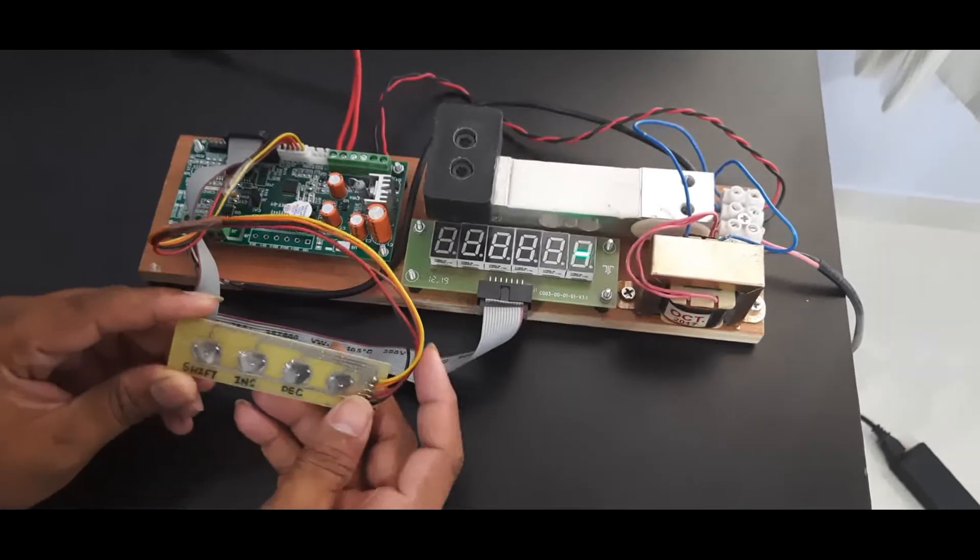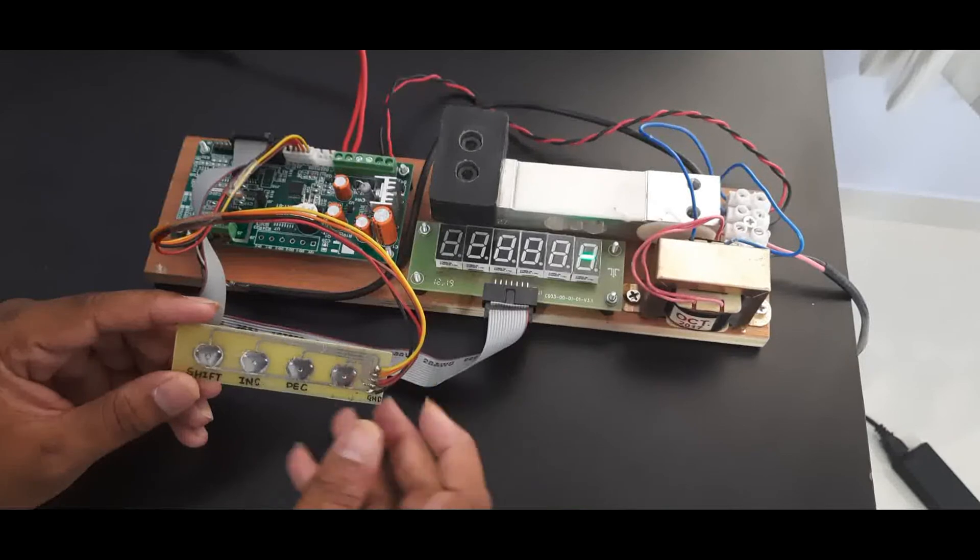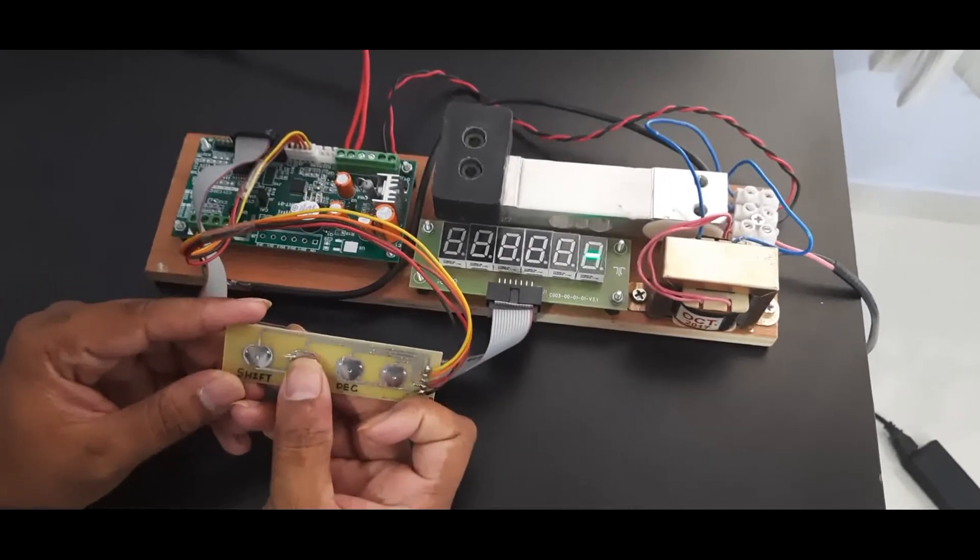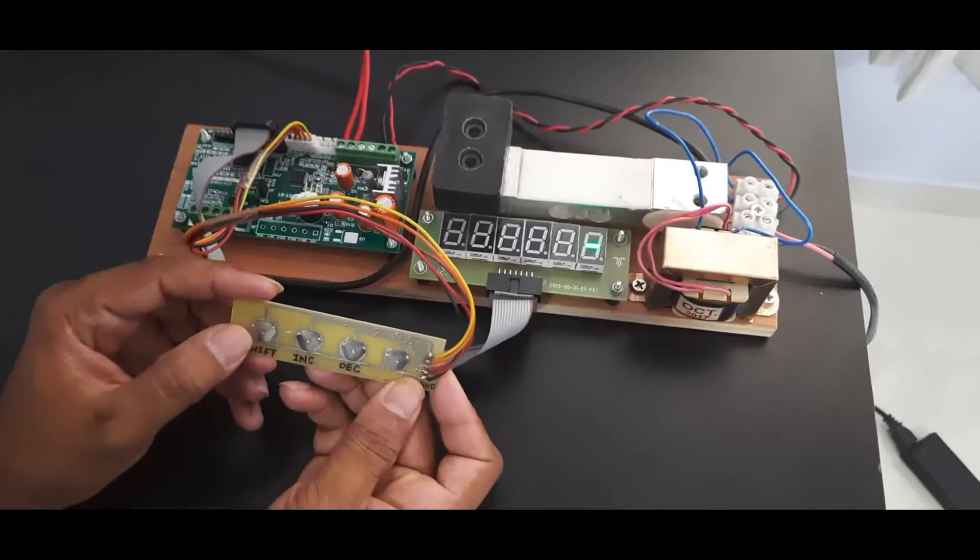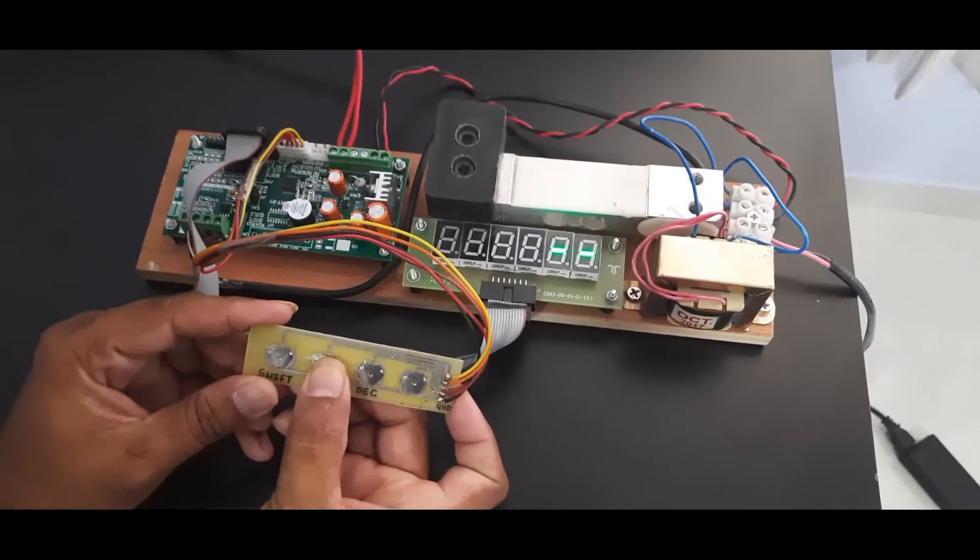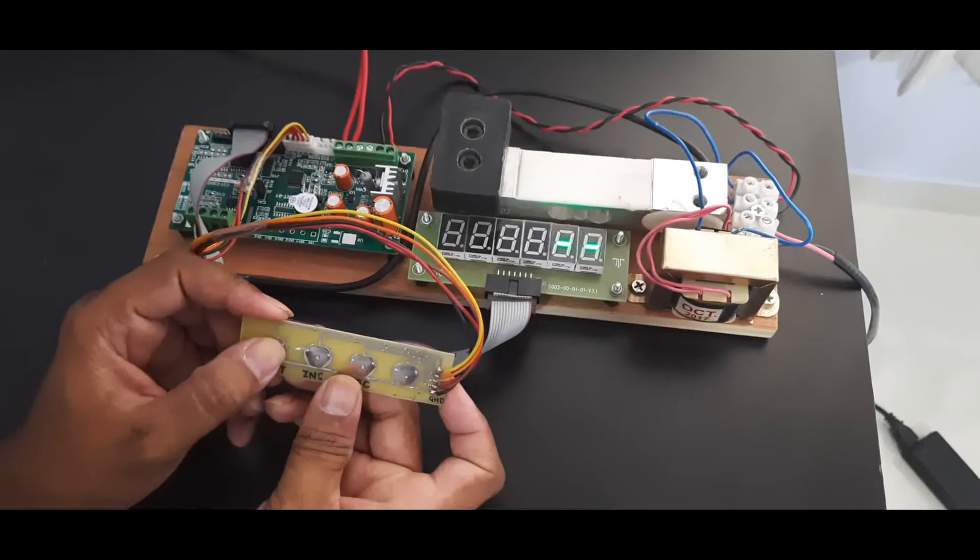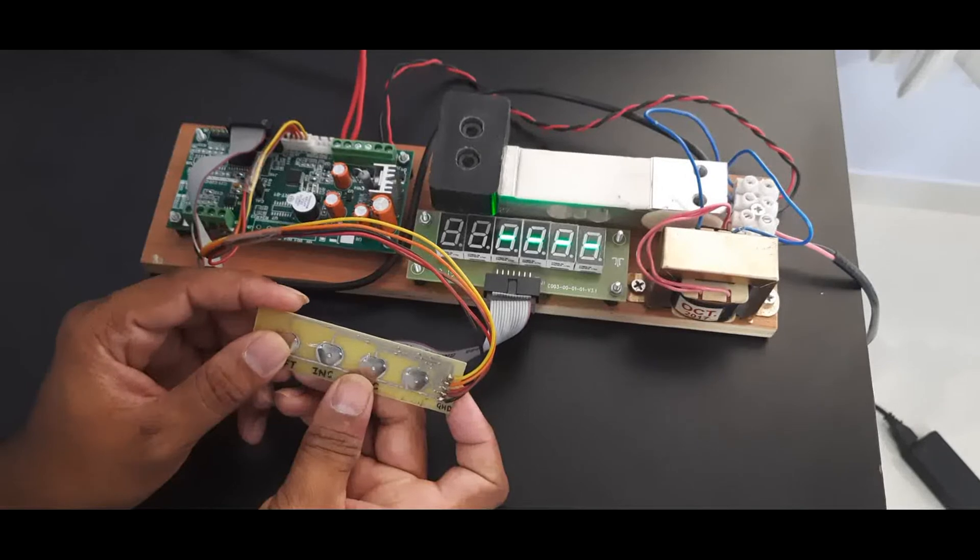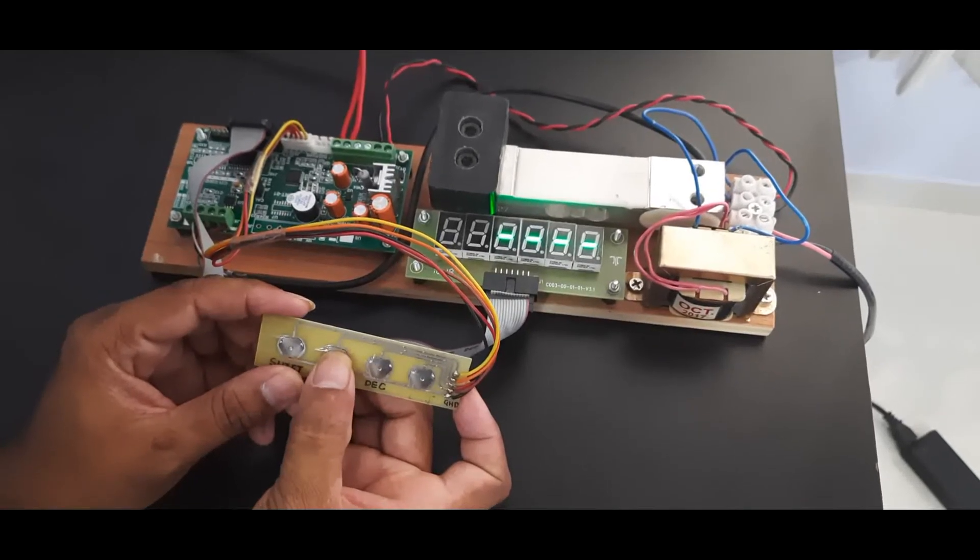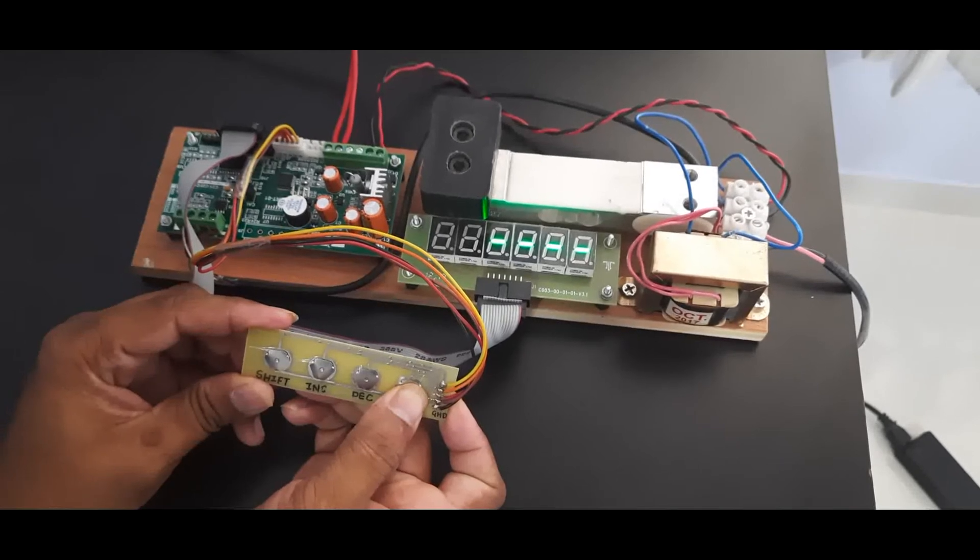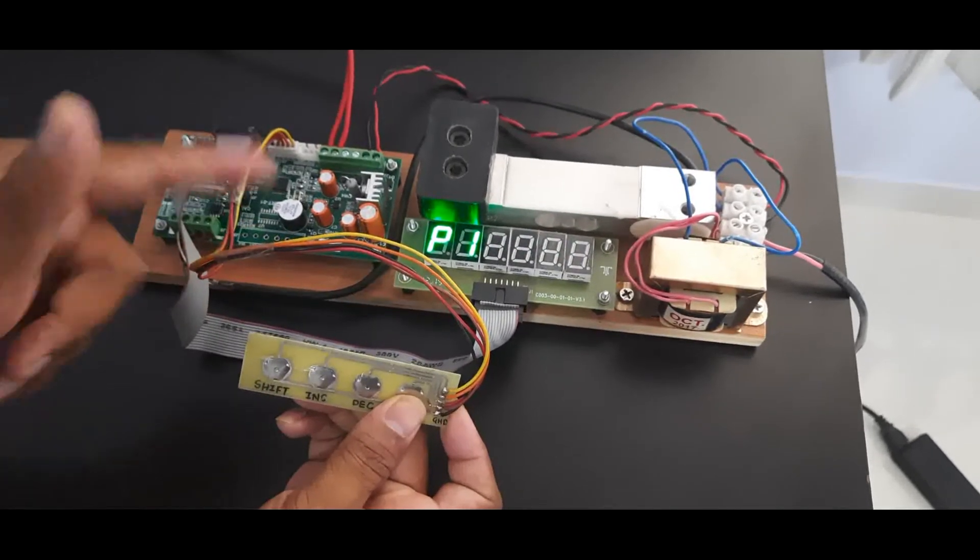Suppose my password is one. I will press increment once, then press shift. Again increment once, shift. Again one, shift. The last digit, enter as one, then press the enter button. Now we're in parameter setting.